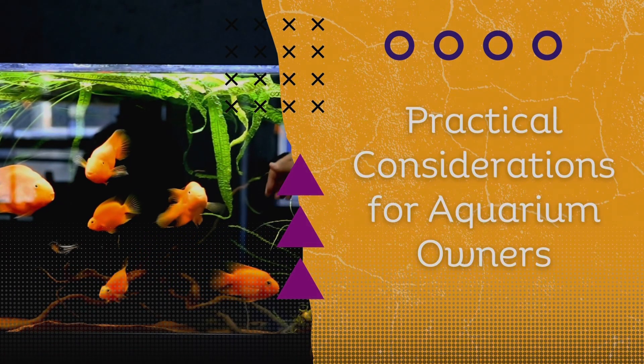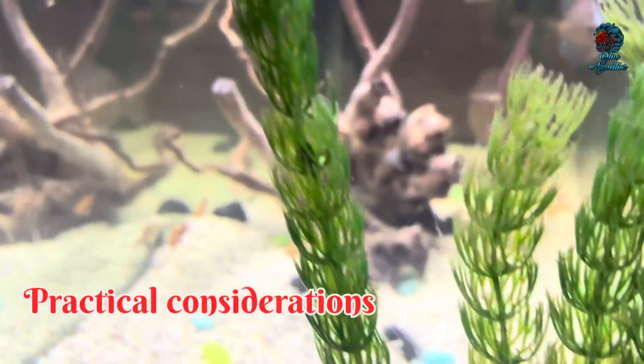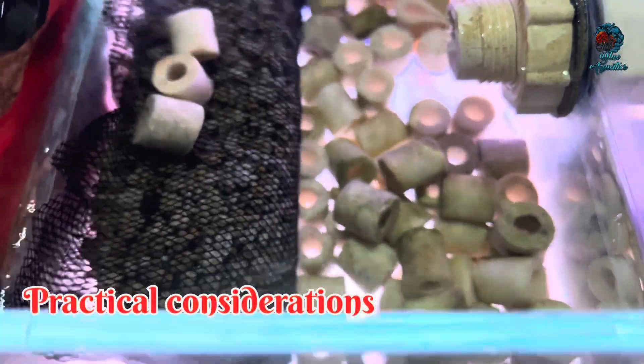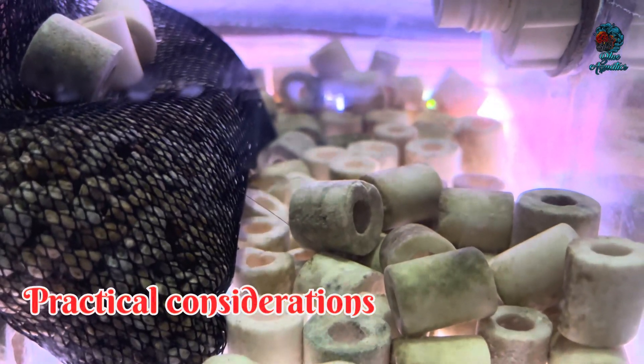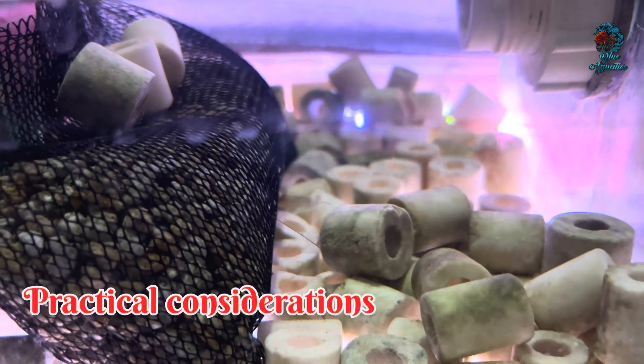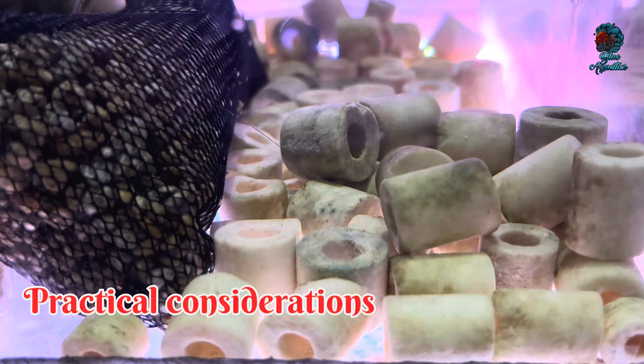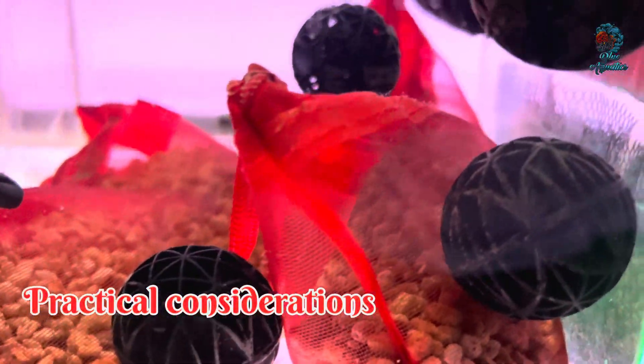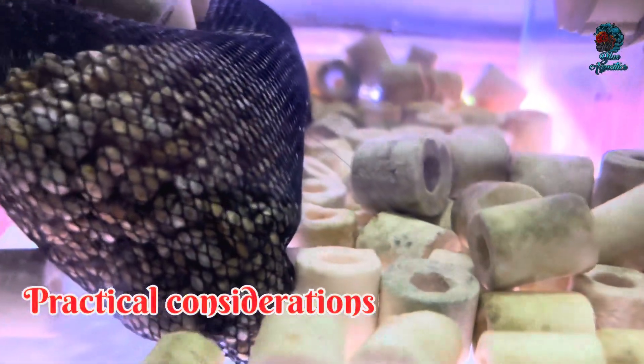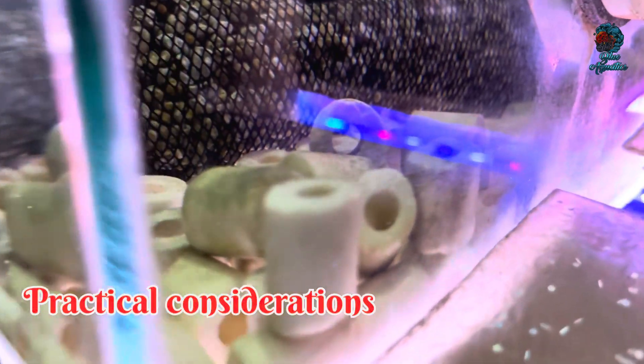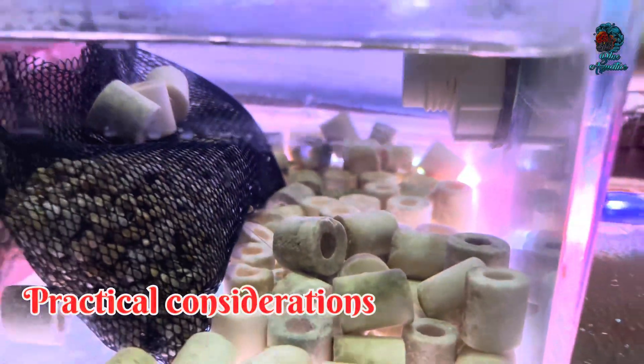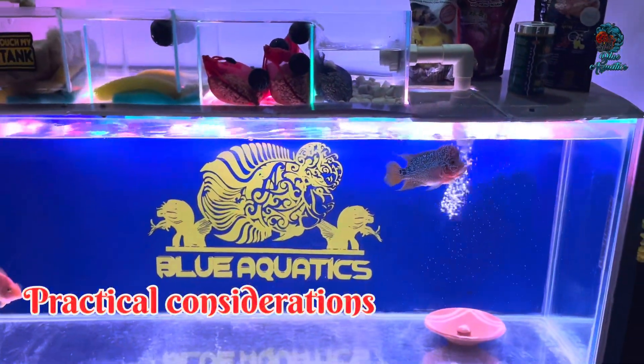Practical considerations for aquarium owners. Now let's talk about some practical considerations for aquarium owners. When choosing biological media for your filter, it's important to select materials that maximize the surface area for beneficial bacteria. Ceramic rings are an excellent choice for this purpose. To ensure optimal performance, it's also important to maintain and clean your ceramic rings regularly. Over time, debris and organic matter can clog the pores, reducing their effectiveness. Rinse them gently in tank water during regular maintenance to keep them in good condition. When placing ceramic rings in your filter, ensure they are positioned in a way that allows water to flow through them effectively. This maximizes the contact time between the water and the bacteria, enhancing the efficiency of biological filtration.